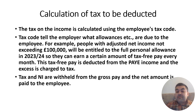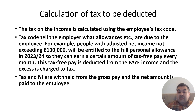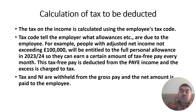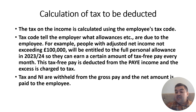The tax on income is calculated using the employee's tax code, which tells the employer what allowances are due to the employee. For example, people with adjusted net income not exceeding £100,000 are entitled to the full personal allowance of £12,570. The personal allowance reduces if income exceeds £100,000 — for each £1 in excess, the personal allowance is knocked down by 50p. This means that at income of approximately £125,140, there is no personal allowance. Tax and NI are withheld from gross pay and the net amount is paid to the employee.